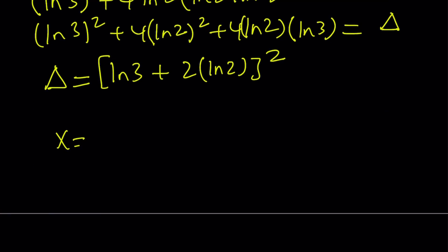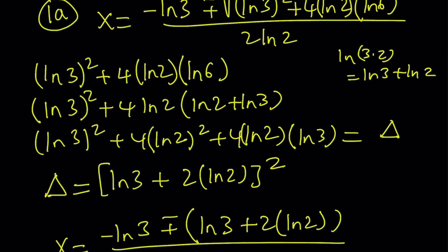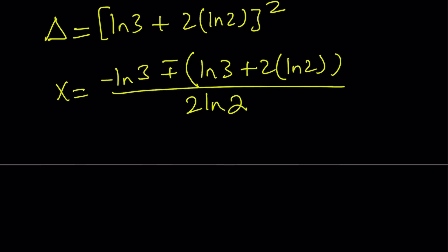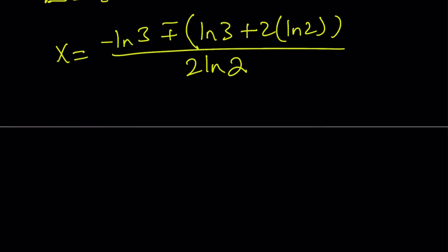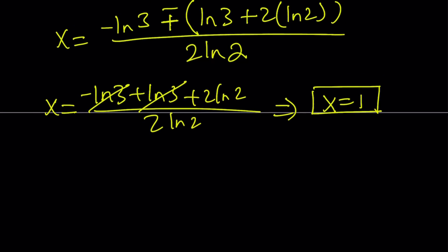From here, x = (-ln3 ± (ln3 + 2ln2)) / 2ln2. This gives us two solutions. First, using the plus sign: (-ln3 + ln3 + 2ln2) / 2ln2. These two cancel out, leaving us with x = 1. Yes, that's one of the solutions.